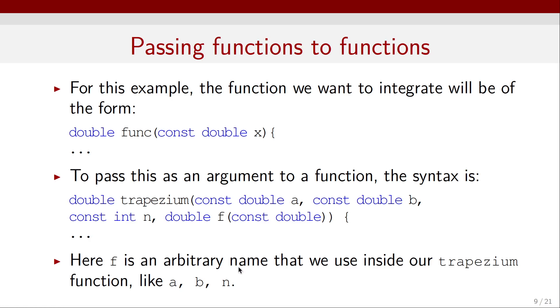So here f is an arbitrary name that we use inside our trapezium function, just like a, b and n. And then when we pass some particular function to the trapezium, that function will be used for the calculations.